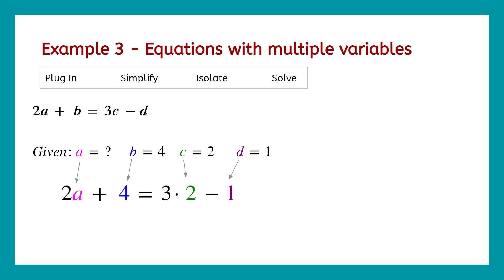Let's plug in those variables. We get 2 times a. And the pink there, a, is just left in our equation because we don't know a. That's what we're trying to solve for. b is in blue there, shown as plus 4. Equals 3 times 2. So we plugged in the value for c, which is 2. And then we have minus 1. Notice the minus 1 there is because we had a negative sign in our original equation. So even though d is equal to 1, when I subtract d, I get minus 1.